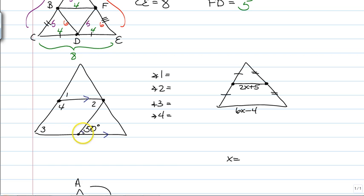So, the first thing we see is that angle 2 is an alternate interior angle with 50. So, angle 2 is going to be 50 degrees.